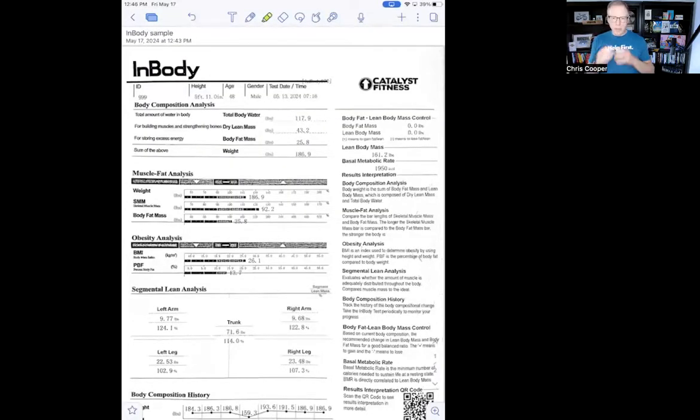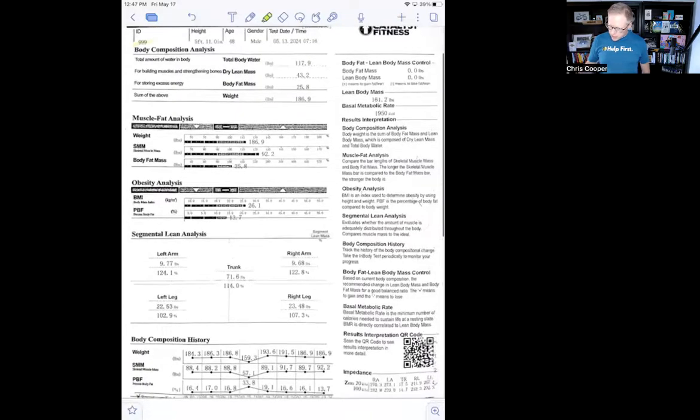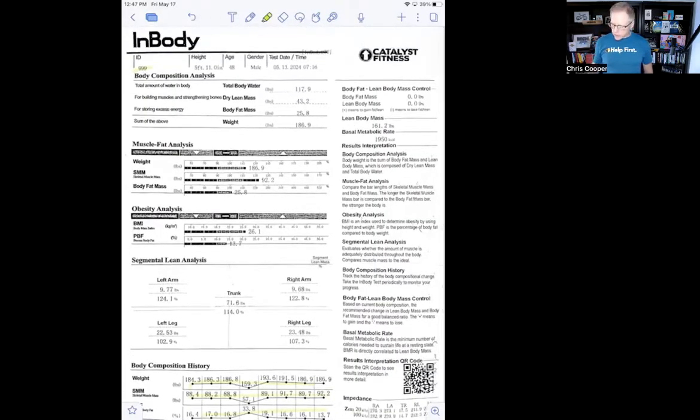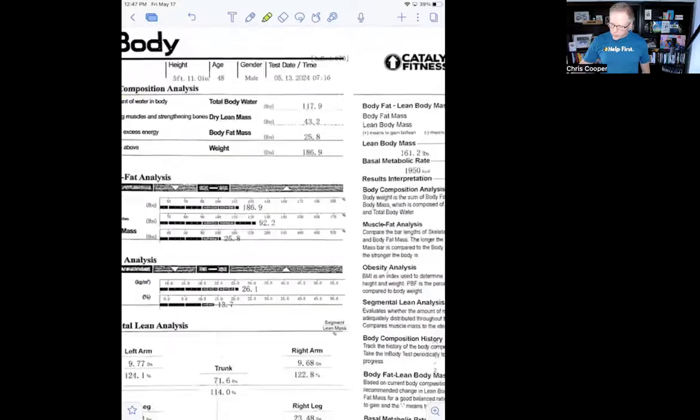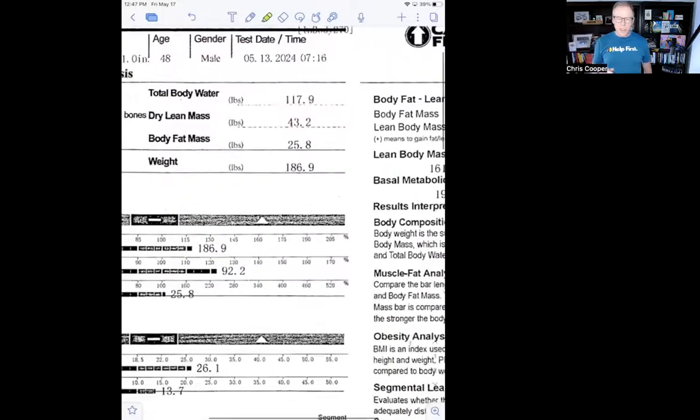When you're looking at your in-body scan, there's going to be a lot of numbers that might not make much sense to you. So here's what's important. When you come to Catalyst, you're going to get your own unique ID so every time you come and do your scan, you're going to see your progress. Down at the bottom, I'll show you what these numbers mean, but you'll be able to track your progress over time.